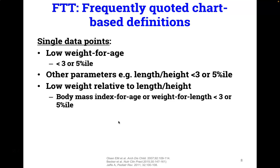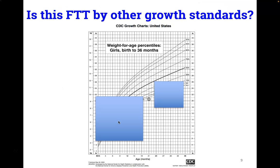Some definitions of failure to thrive use weight for height less than the third percentile, or BMI less than the third percentile, as diagnostic. Back to the case: you should first note that the weight for age was a single point, so this patient could have failure to thrive, and you would probably like some more information — both a current length measurement and prior growth measurements.